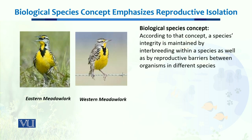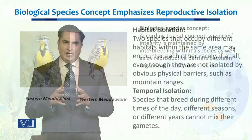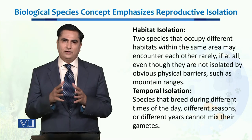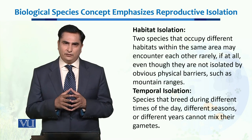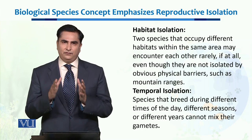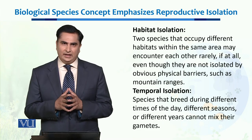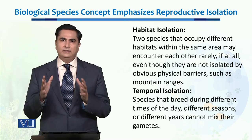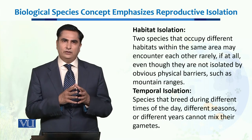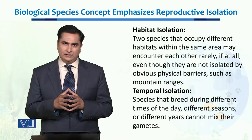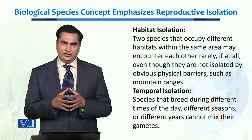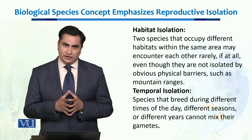For example, in habitat isolation, even though some species live together or live closely, the difference in their habitat — even within the same ecosystem — makes it difficult for them to breed. Some species live on the trees while some live in the water. Although they live in the same ecosystem, there are highly unlikely chances that they could mate with each other.